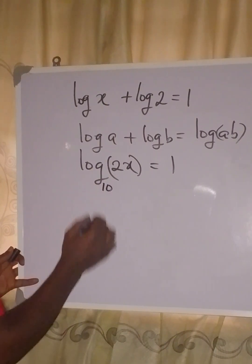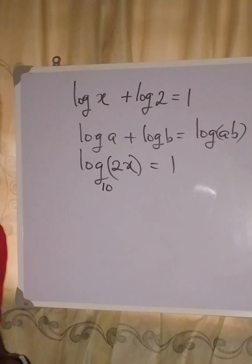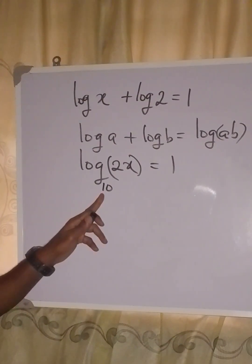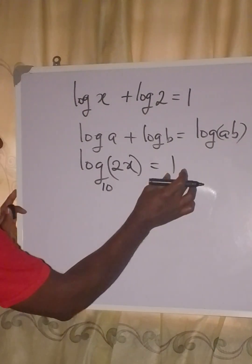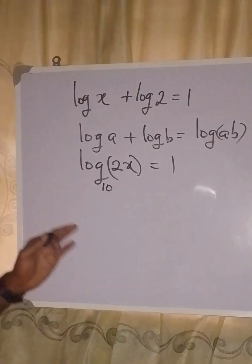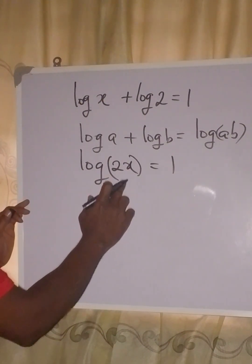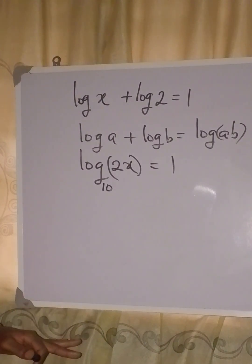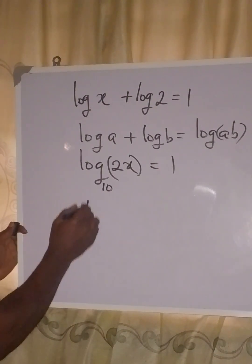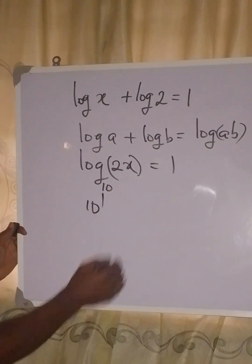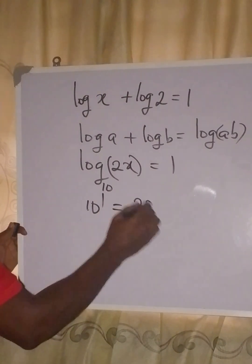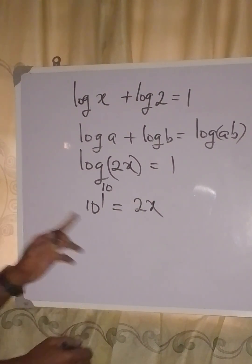How do you do that? We know that here is to be stem because this is natural logarithm, so this right here would take this to be its base and whatever you have will be equal to 2x. That is how you should do it. So we are going to have 10 to the power of 1 equals 2x.